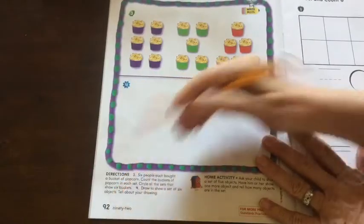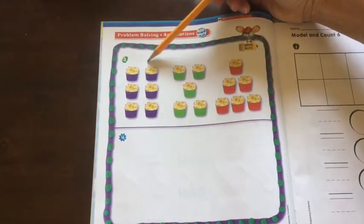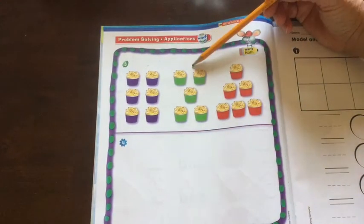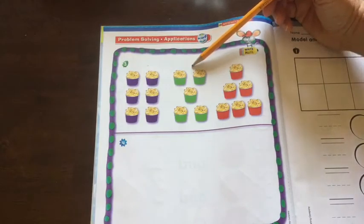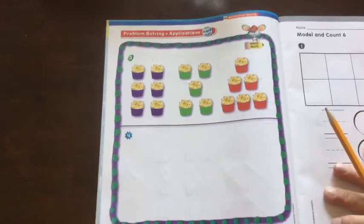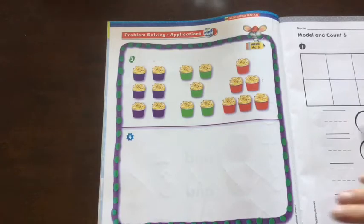Page 92. Up at the top we have 3 sets of popcorns. Some popcorn is in a purple container. Some popcorn is in a green container. Some popcorn is in a red container. Alright. The directions read. 6 people each bought a bucket of popcorn. Count the buckets of popcorn in each set. Circle all the sets that show 6. Okay. So you have to count. And then circle the ones that have 6.